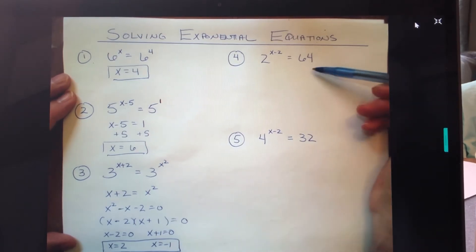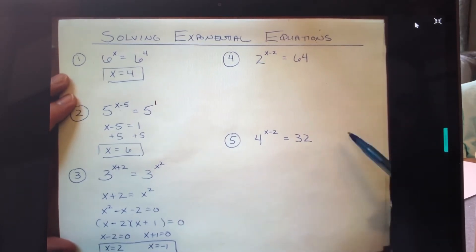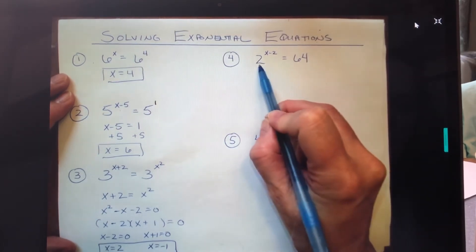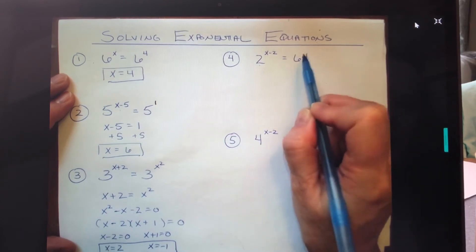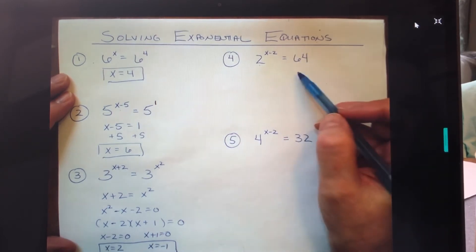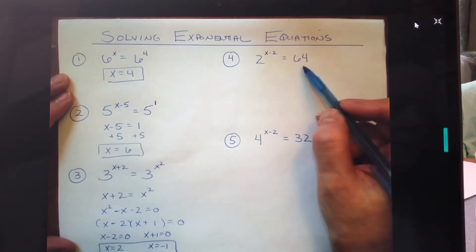But it is worth your time to look at an exponential and ask yourself: even though it doesn't look like it's one-to-one, could I make it one-to-one? And one way to think about that here in number four is I have a 2 here. If I could rewrite 64 as 2 to a power, it would be in my best interest to do so, because then I could make this problem one-to-one and it would be the fastest way to go about solving it.